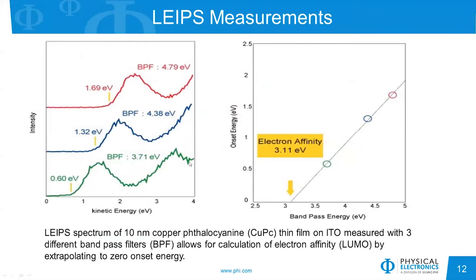We can measure the electron affinity of materials using LIPS by using different bandpass filters and plotting the intensity obtained with those filters versus the kinetic energy of the incoming electron beam. We plot the onset of emission versus kinetic energy versus the bandpass filter energy and see a linear line that extrapolates down to zero onset energy — that's the electron affinity of the material. That electron affinity is the same energy as the lowest unoccupied molecular orbital, or LUMO.